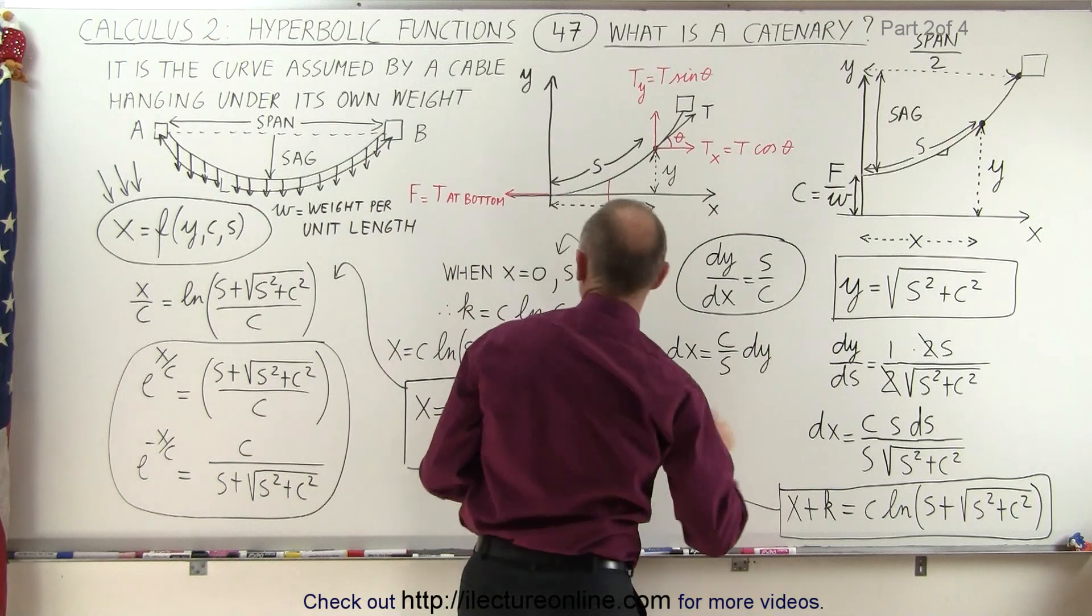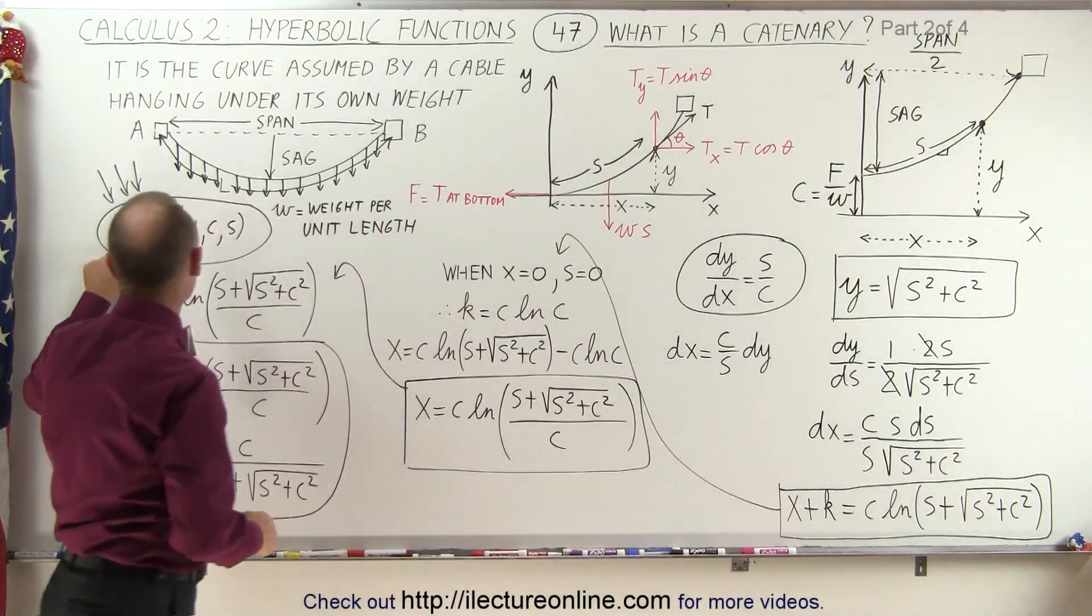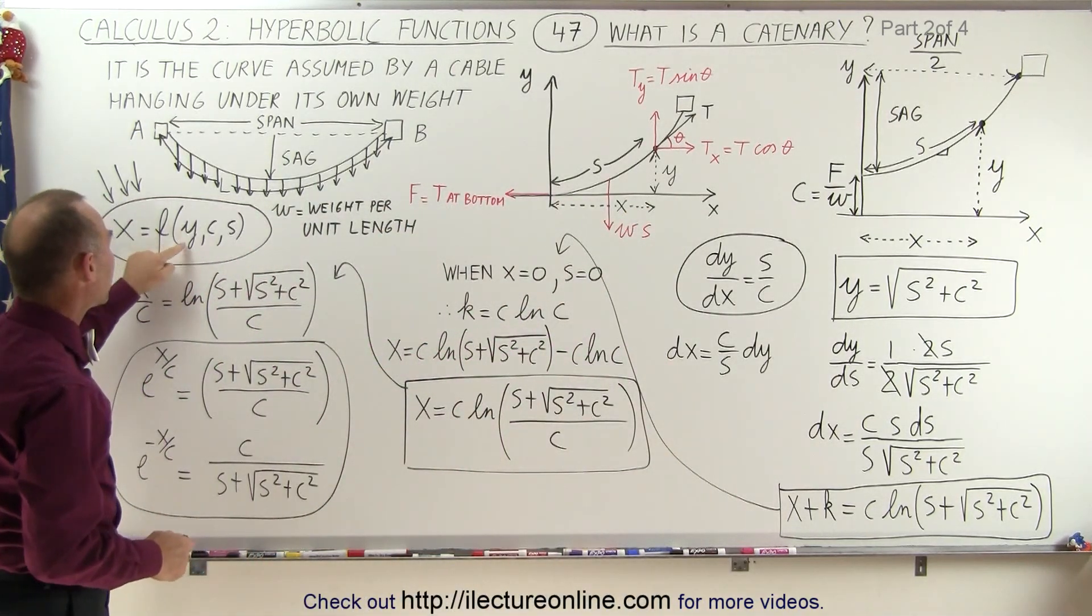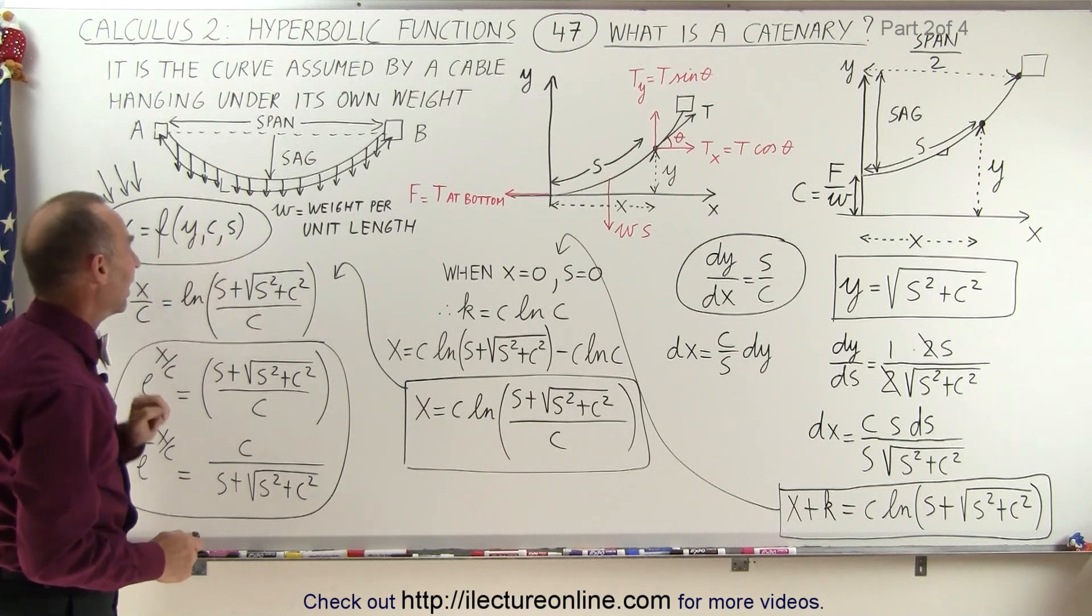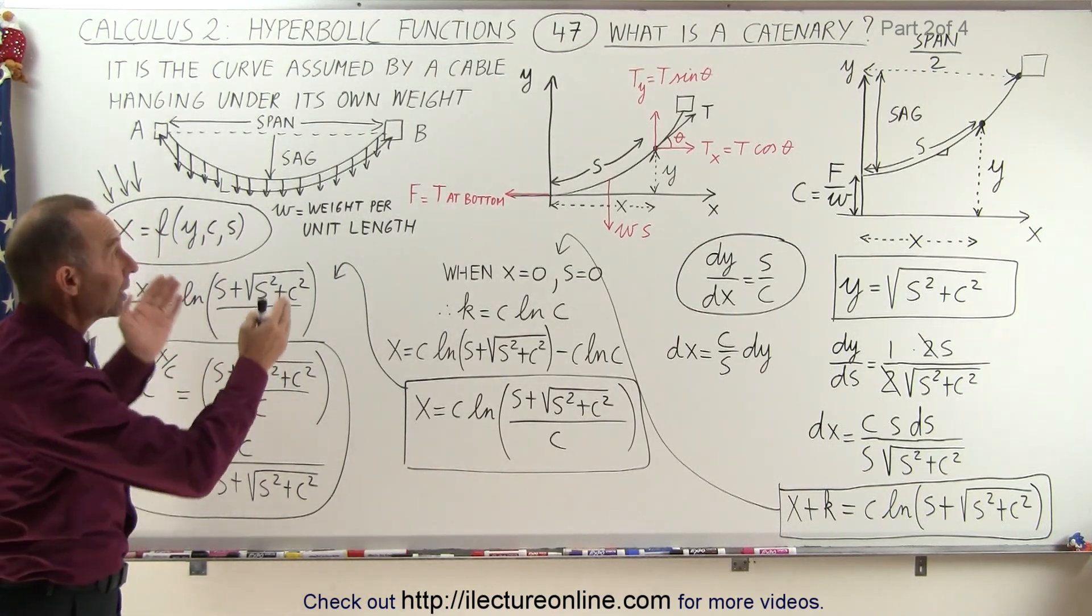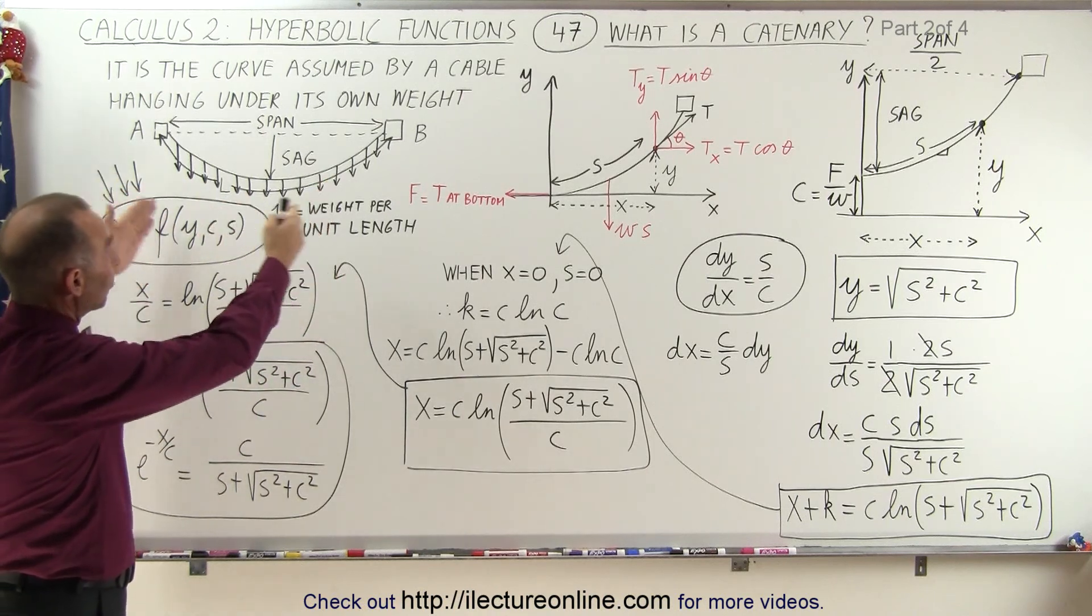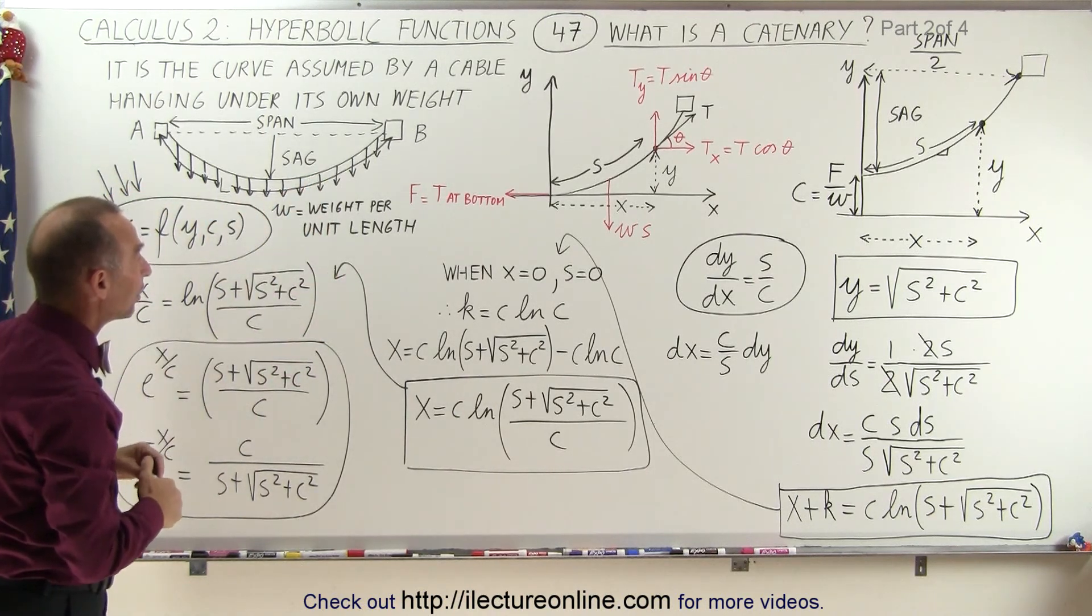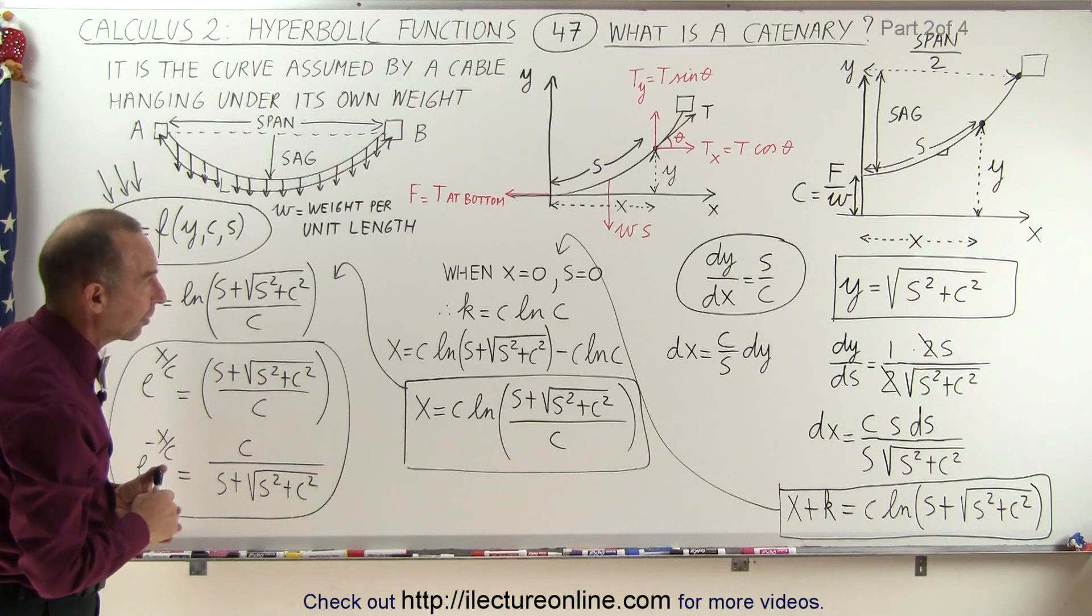Now what we're going to do is we're trying to find an equation where x is a function of the other three variables y, c, and s. And by doing so we'll try to get into the format where we can explain or express the function of a hanging cable in terms of the hyperbolic function.